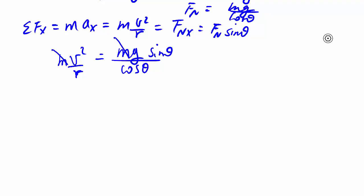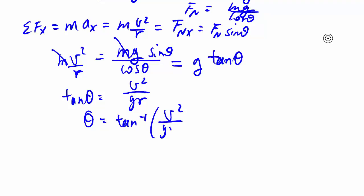Subbing things in we have mv squared over r equals mg over cosine theta times sine theta. M cancels out so it doesn't matter how heavy your car is, every single vehicle will act the same way. Sine over cosine as you know is tangent, and so we can use that to solve for my theta. Theta is the inverse tangent of v squared over gr.